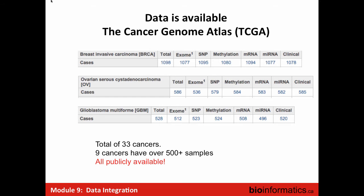Some of this data is publicly available. TCGA — the Cancer Genome Atlas — is an amazing resource. They have data on 33 different cancers; over nine cancers have more than 500 patients. They have collected all these different modalities: exome data, SNP arrays, methylation data, mRNA, microRNA, clinical data, and proteome data for about 180–190 proteins across many of these cancers. In the lab afterwards, you will be working with one of these datasets.